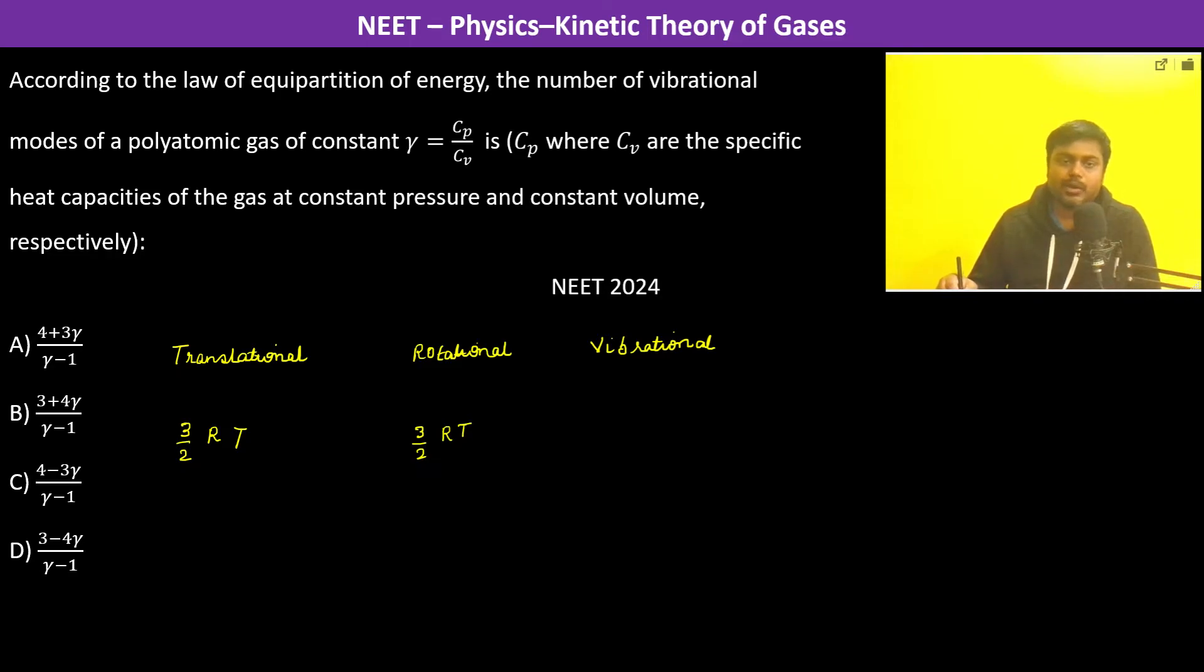We are taking for one mole. And vibrational, so let the degree of freedom for vibrational be F. So we will be having F into R into T. Let us multiply by n also which is the number of moles.